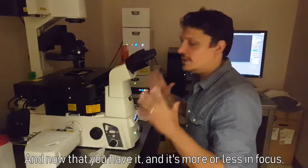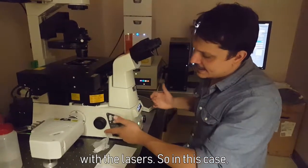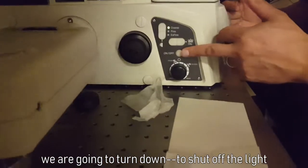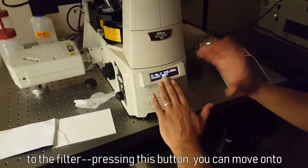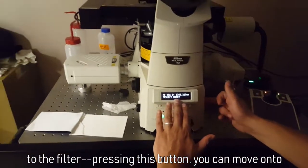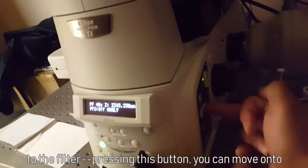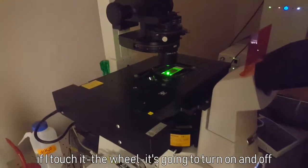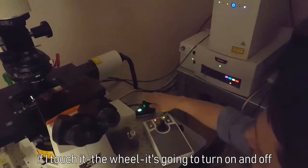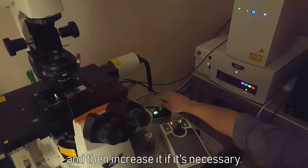And now that you have it and it's more or less in focus, most of the time you want to see what's happened with the lasers. So in this case, we are going to turn down to shut off the light for the DIC, and we have to move from the analyze to the filter. Pressing this button, you can move onto the first laser power. In this case it's on. If I touch the wheel, it's going to turn on and off. It's going to start with very low laser power and then increase it if it's necessary.